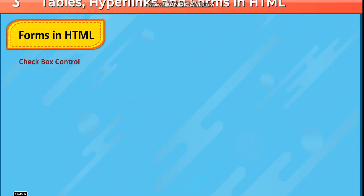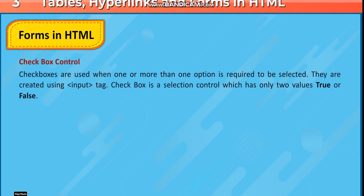Checkbox control: Checkboxes are used when one or more than one option is required to be selected. They are created using the input tag. A checkbox is a selection control which has only two values: true or false.